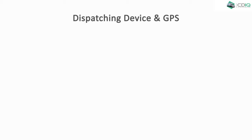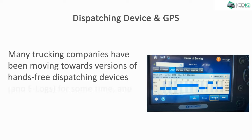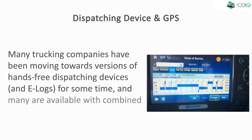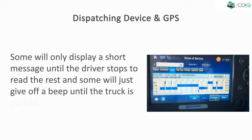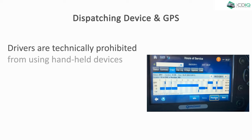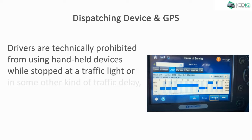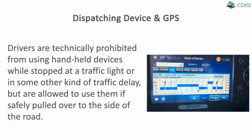Many trucking companies have been moving towards hands-free dispatching devices, and many are available with combined GPS systems. Some will only display a short message until the driver stops to read the rest, and some will just give off a beep until the truck is parked. Drivers are technically prohibited from using handheld devices while stopped at a traffic light or in some other kind of traffic delay, but are allowed to use them if safely pulled over to the side of the road.